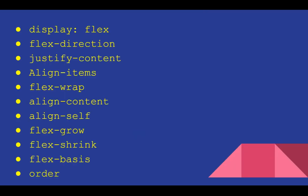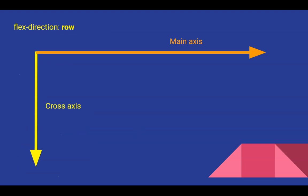Flexbox uses a set of properties — some applied to the container and some to the children elements. It starts with 'display: flex' applied to the container, then 'flex-direction', 'justify-content', 'align-items', 'flex-wrap', 'align-content', 'align-self', 'flex-grow', 'flex-shrink', 'flex-basis', and 'order'. I'll cover all of these.